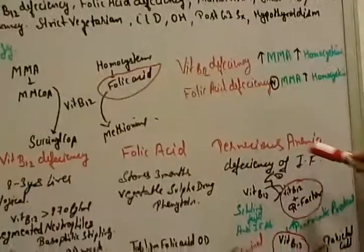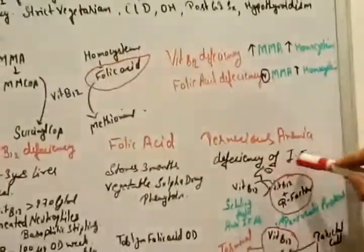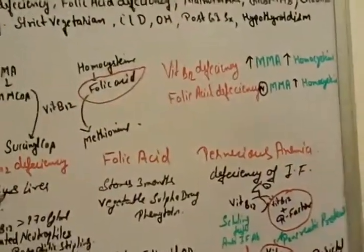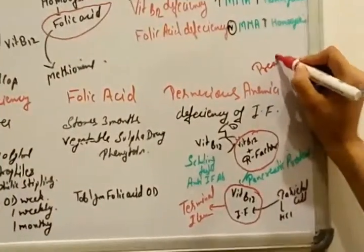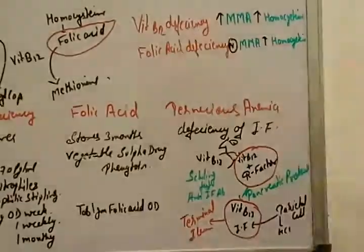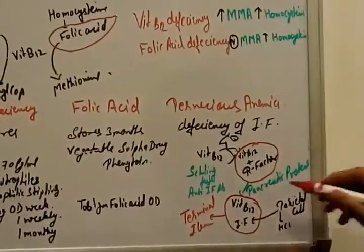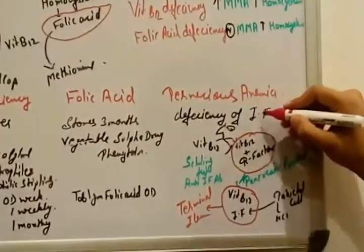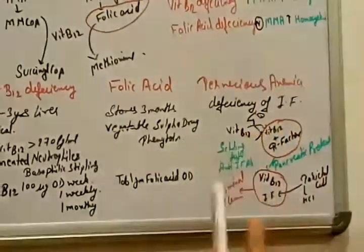But I am going to explain you pernicious anemia. What is it? Pernicious anemia. It's a deficiency of intrinsic factor. What is intrinsic factor? You know about parietal cell. In our stomach we have a cell, then it secretes intrinsic factor. So if there is deficiency of intrinsic factor, I am going to explain you.